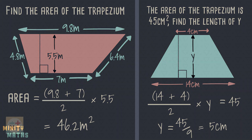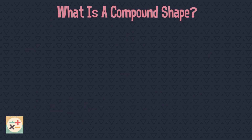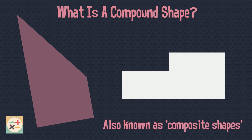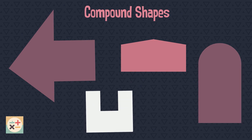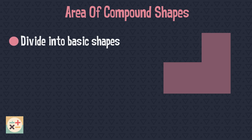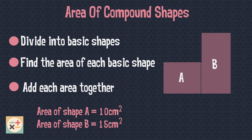Finally, we are going to put together what we have learnt so far and use this to find the area of compound shapes. So, what exactly is a compound shape? Well, a compound shape is a shape made up of two or more 2D shapes, such as rectangles and triangles. Another name for compound shapes is composite shapes. Here are some examples of compound shapes. So how can we find the area of a compound shape? Well, we can deconstruct the compound shape into basic shapes. There may be more than one way to split the shape up. We can then use the formulas for finding the area of each basic shape. Once we have done this for all the basic shapes, we can add each area together to find the entire area of the compound shape.